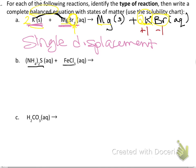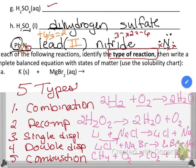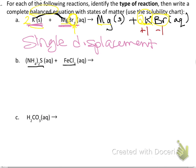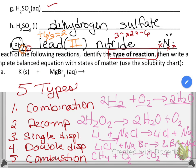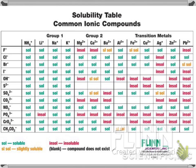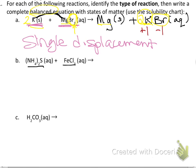For the next problem, neither reactant is a free element, so it's probably not single displacement. It's not decomposition because we're starting with two different compounds. It could be double displacement since that involves two compounds producing two other compounds. It can't be combustion because there's no oxygen in the reactants. So by elimination, I'm going to try it as a double displacement.